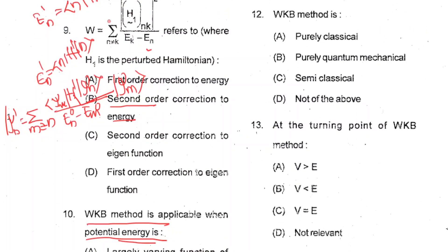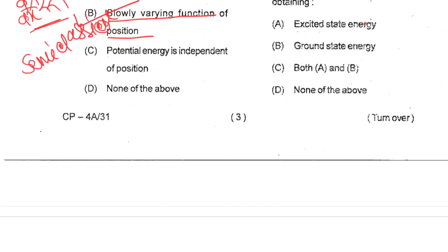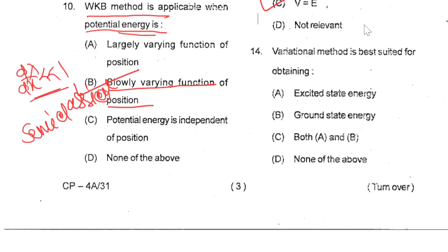Question number 12: WKB method is semi-classical method. So C is your correct option. Question 13: At the turning point of WKB method, V equals to E. So C is your correct option. Question 14: Variational method is best suited for obtaining ground state energy. So B is your correct option.